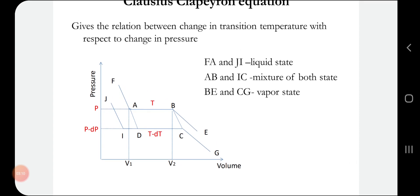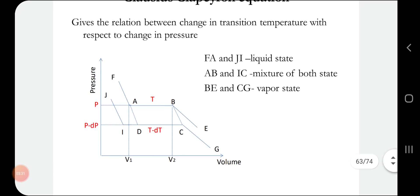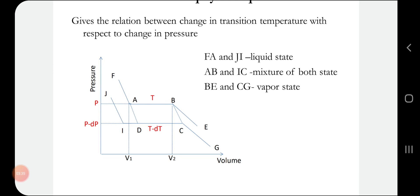Now we will discuss the derivation using an indicator diagram. Consider a material in liquid state — label this region. At temperature T, point A is in the liquid state. From A to B, the substance is in a mixed state of liquid and vapor. From B to E, the system is in the vapor state only.